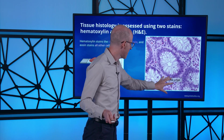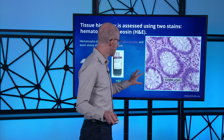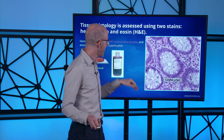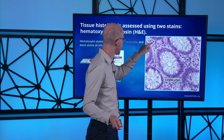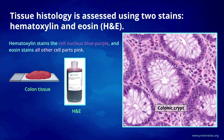Here we're looking at a colon tissue biopsy stained with hematoxylin and eosin. The hematoxylin stains the cell nucleus a blue-purple color, while the eosin stains every other part of the cell pink. You can see individual nuclei and everything else is pink. This gives a really nice view of colonic crypts — intestinal glands made up of epithelial cells that line the entire colon and are critical for colon function.